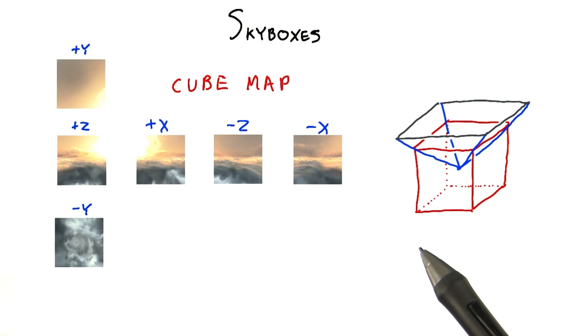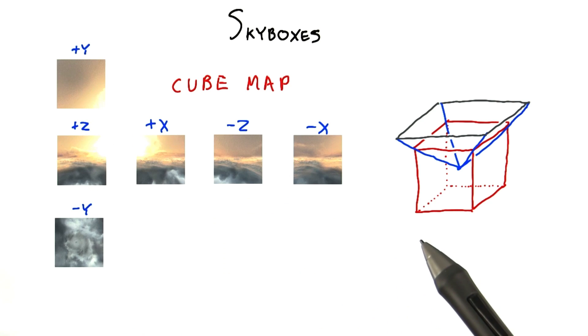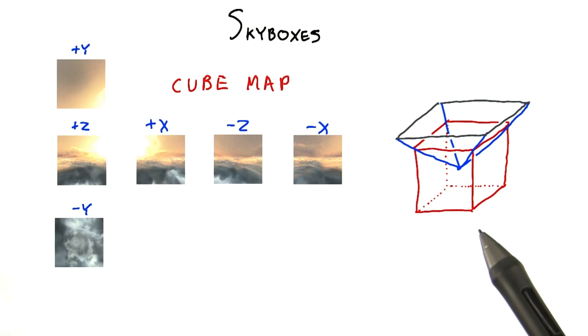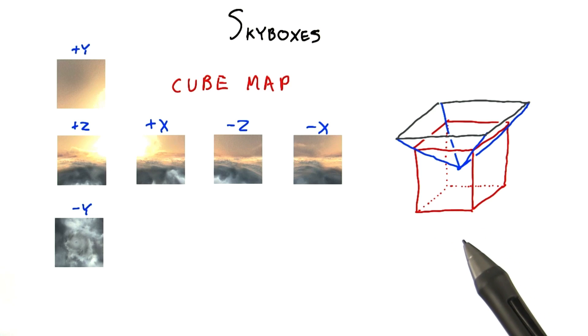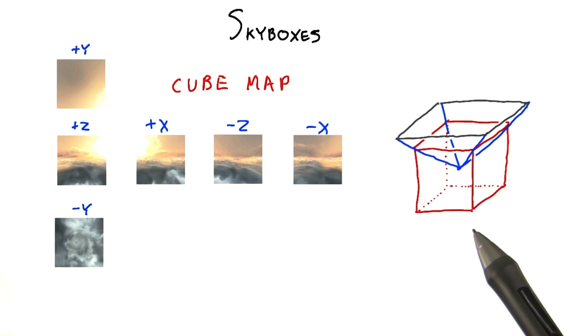The cube shape is not required. It's possible to have other geometry, such as a hemispherical dome around the scene. Whatever the shape, our eyes can't see the z-buffer, so we can't tell the sky is only, say, 100 meters away.